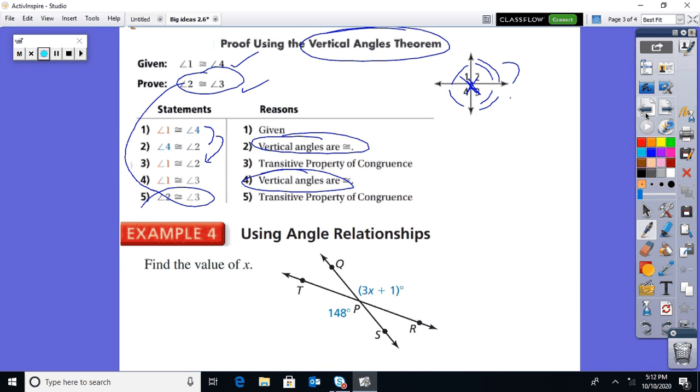Using angle relationships, let's talk. The rest of this section is just using the vertical angles and linear pair and how you can use them to solve. So this one's pretty simple. You can always assume vertical angles. You got two straight lines happening here with an intersection at P. So we can always take the two expressions and set them equal to each other. Subtract 1 from both sides, 147. Divide by 3, so x is 49.